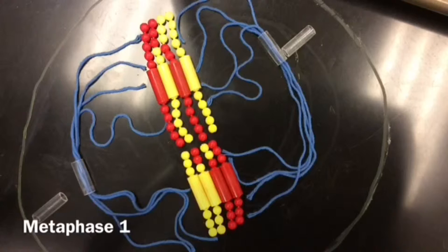In metaphase I, the homologous pairs line up along the equator of the cell. The spindle fibers from the centrals attach themselves to the centromere of each pair of chromatids.